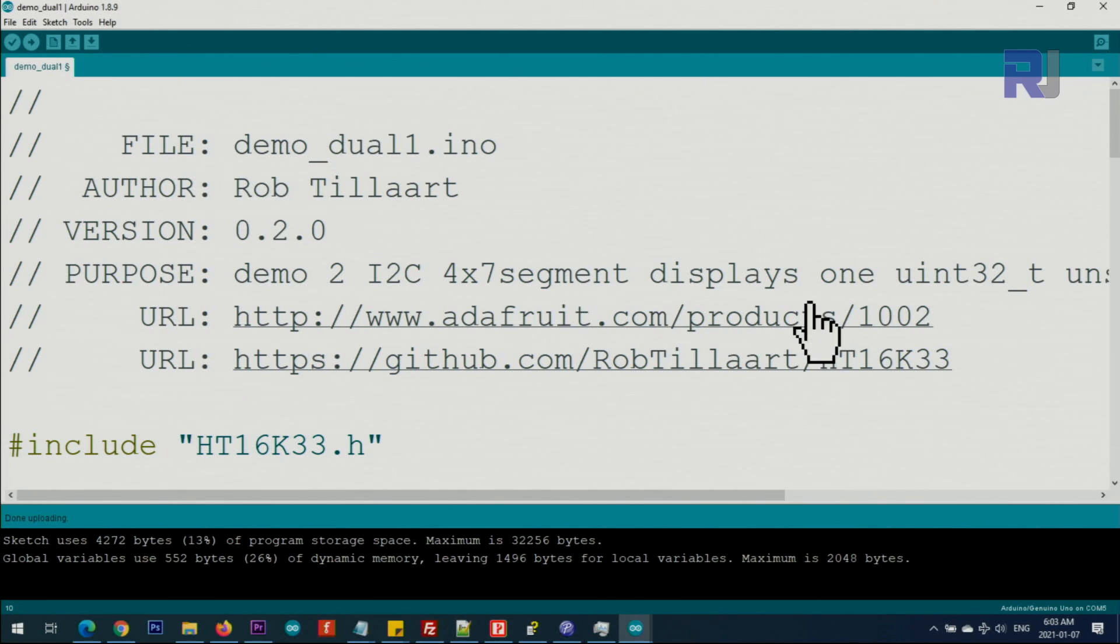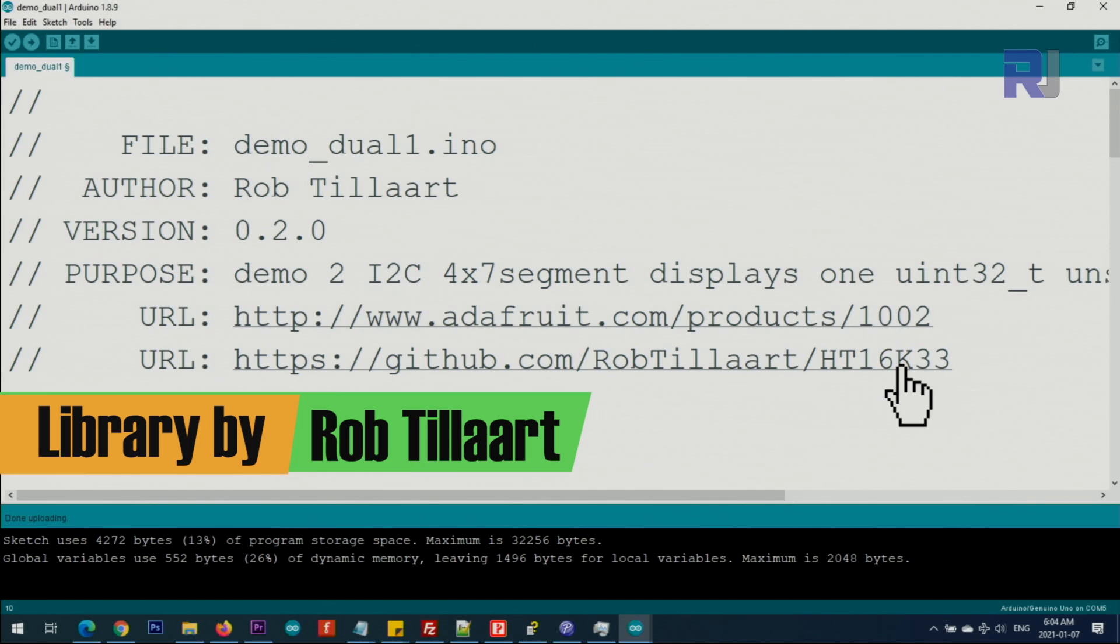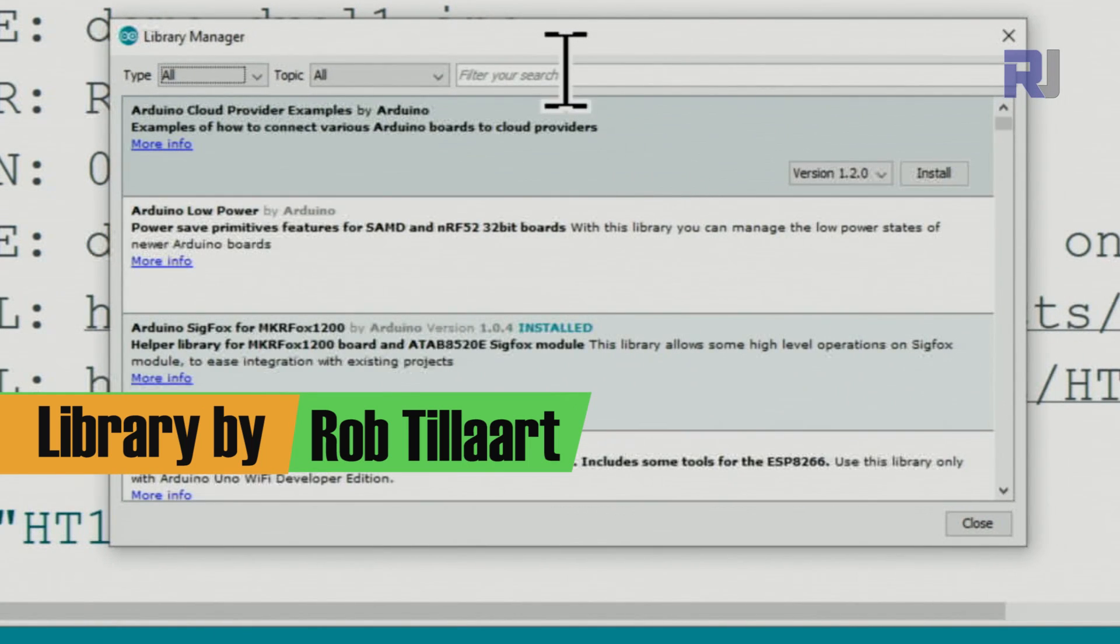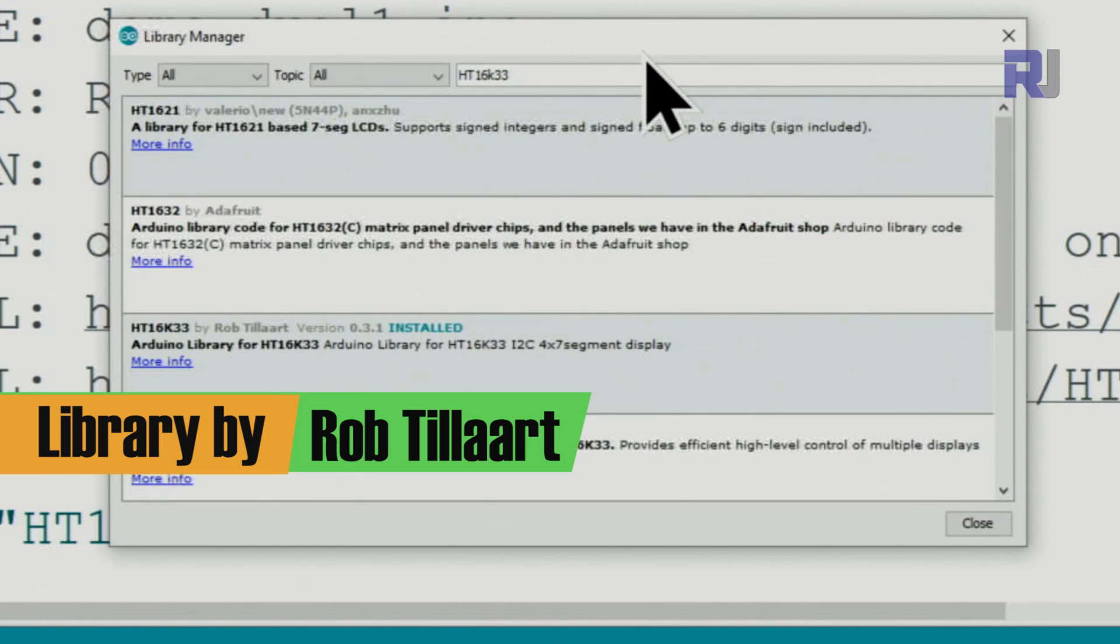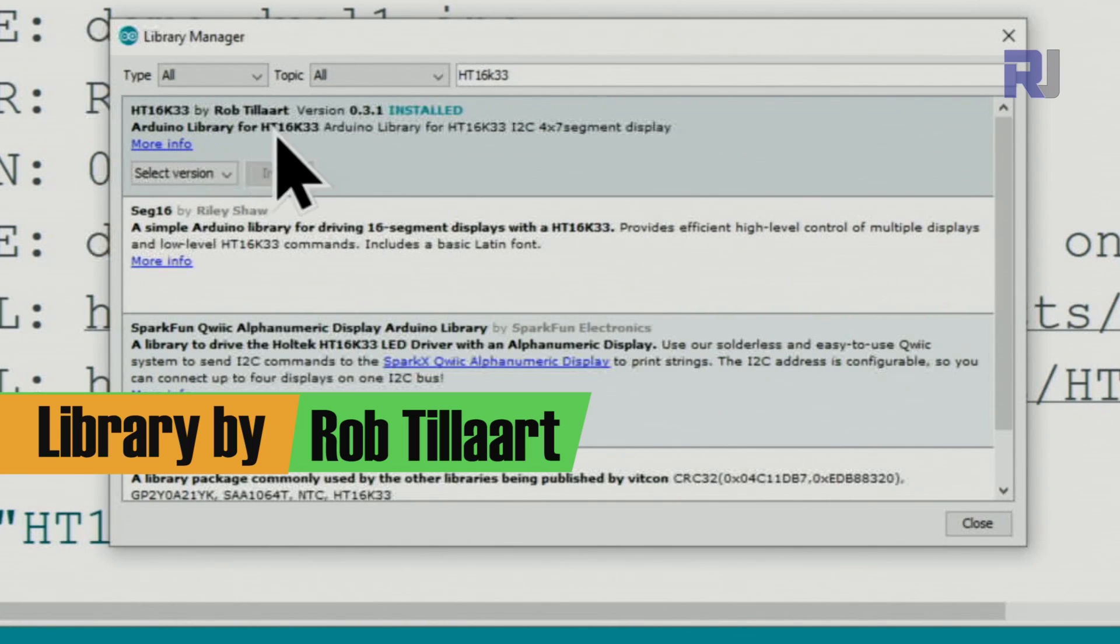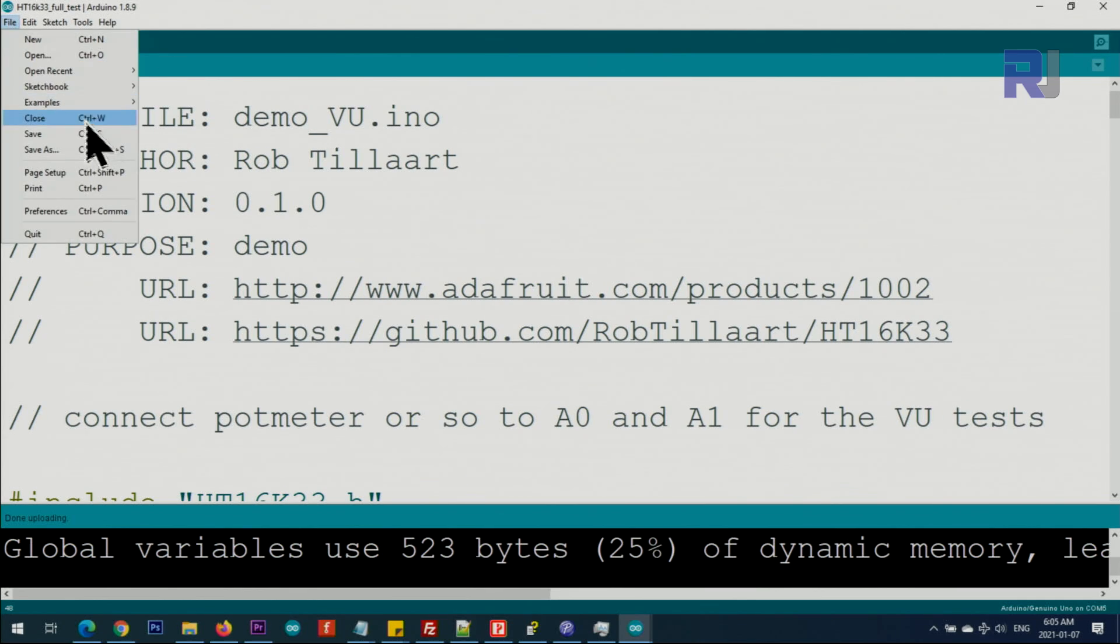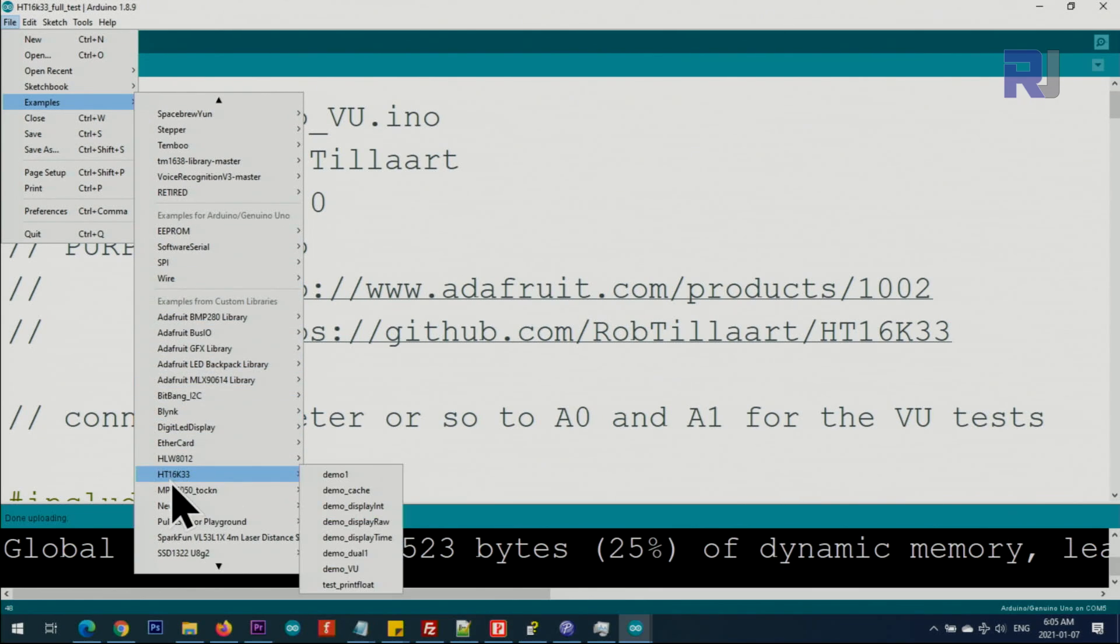Now let me explain the code. I've downloaded the library from this URL. The author is Rob Tillaart and this is the link where we can download the library. If you click on Tools, Manage Libraries, and type HT16K33, you will see all the libraries. The first one is Rob Tillaart's. I've installed it. For you, it will show Install - just click and install it. Once you install the library, you can access the examples by clicking File, Examples, scroll down until you see HT16K33, and these are all the examples that are available.